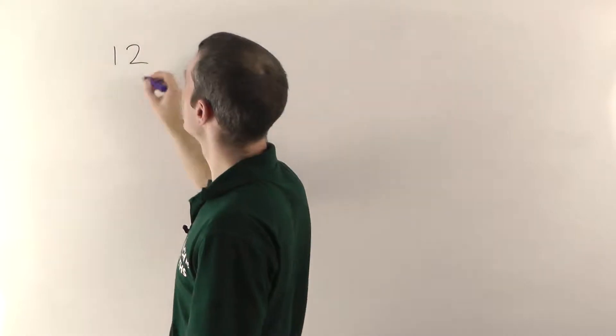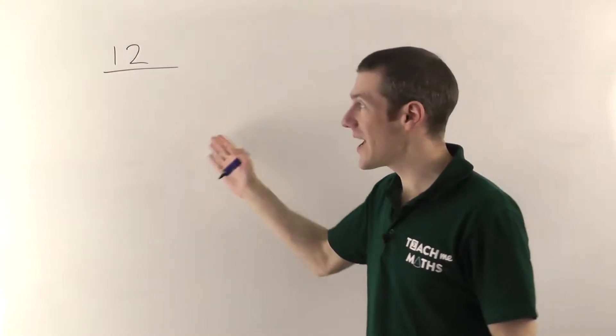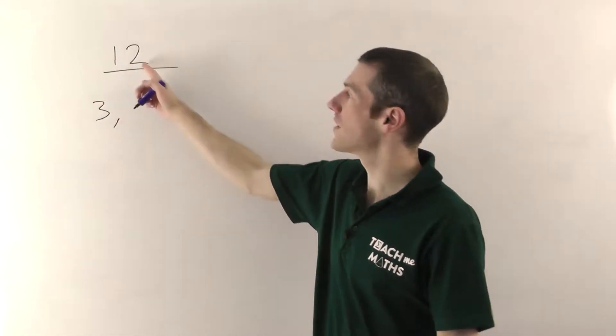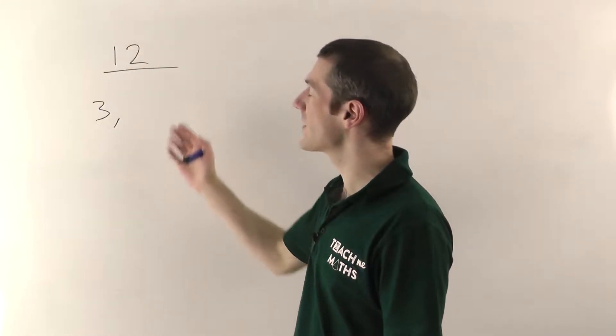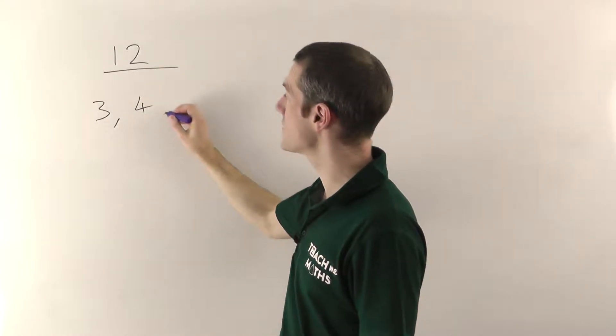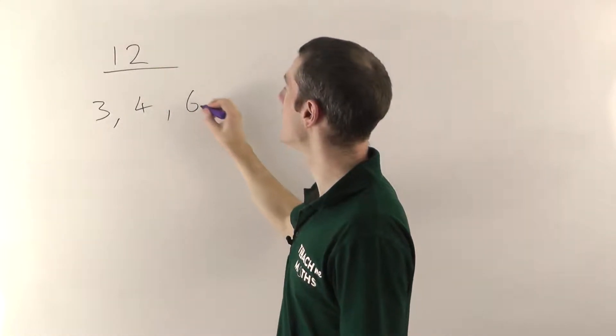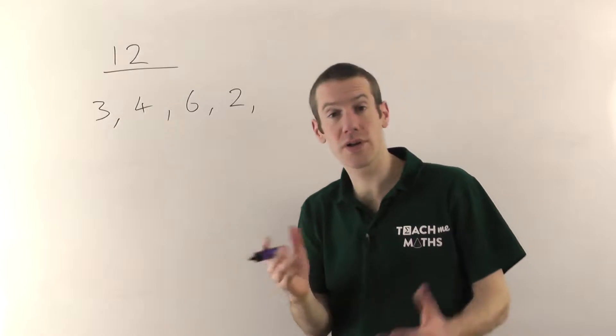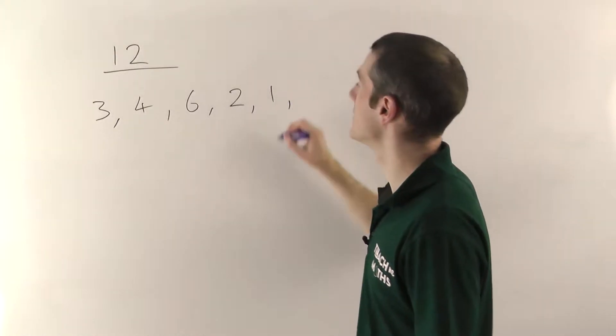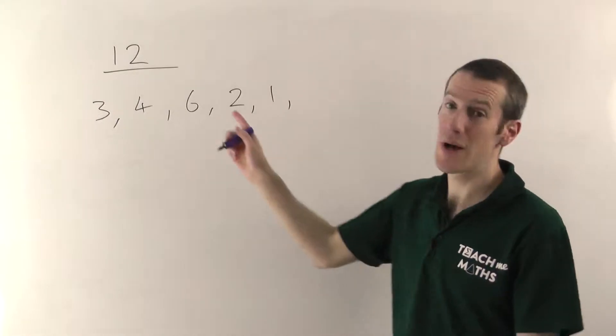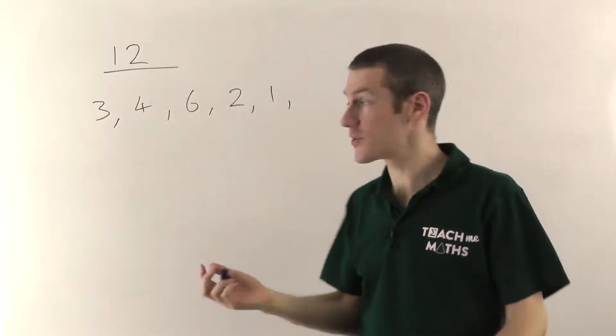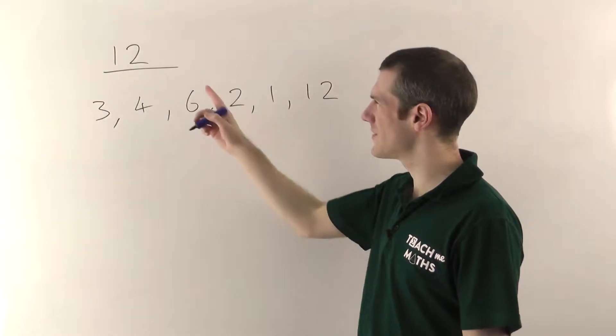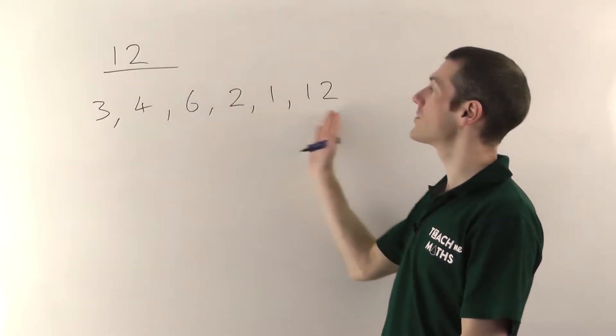So if we take a number like 12, a factor of 12 is any number that divides into 12. So 3 for example is a factor of 12 because 3 goes into 12 four times. Other factors of 12 would be 4, because 4 goes in obviously 3 times. 6 is going to go into 12. 2 is an even number so 2 will go in. 1 of course. 1 goes into every number so 1 goes into 12. Is that all of them? Oh 12. Of course 12 is divisible by 12. 12 goes into 12 once. So 12 is also a factor and I think that's it. 5 is not going to go in, 7, 8, 9, no they're not going to go in. So those are all the factors of 12.